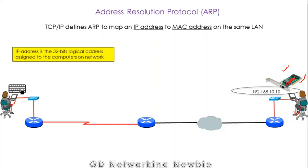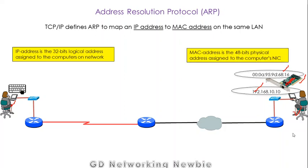An IP address is a 32-bit logical address assigned to computers on the network. A MAC address is a 48-bit physical address assigned to the computer's network interface card. Every network interface card is assigned a physical address having 48 bits. This is the hexadecimal representation — each hexadecimal digit is represented by 4 binary bits, so taking 4 bits, 4 bits, 4 bits gives us 48 bits total. This is the physical address or MAC address of the network interface card.